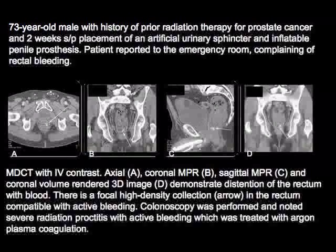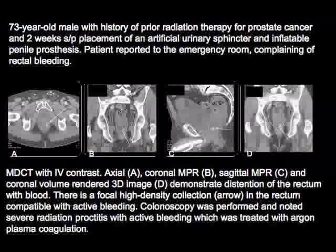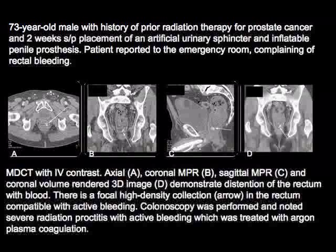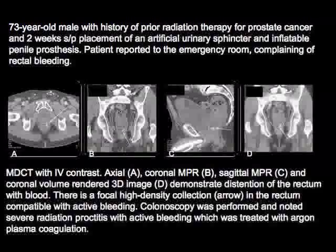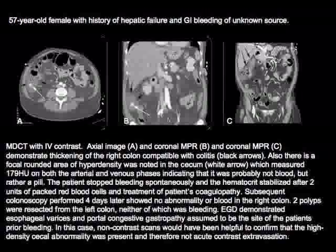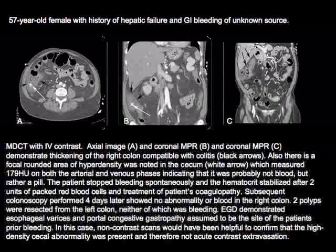Here are some examples. A 73-year-old male with prior radiation therapy for prostate cancer presents with rectal bleeding. On all views there is a high-attenuation focal lesion in the rectum — the site of active bleeding. Colonoscopy confirmed severe radiation proctitis, treated with argon plasma coagulation. Another case: a patient with hepatic failure and unknown GI bleeding. Looking at the cecum, there is a round high-density structure appearing to be active bleeding — but it does not change between sequences.